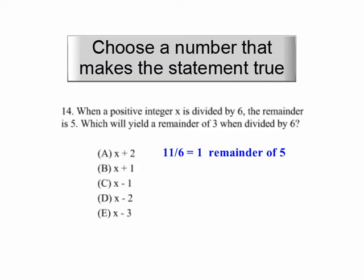I want a number that will yield a remainder of 3 when I divide it by 6. Well, 9 divided by 6 leaves a remainder of 3 — 6 goes into 9 one time and leaves 3 left over. What's the difference between 11, or x, and 9? Well, 11 minus 9 is 2. So x minus 2 would leave a remainder of 3.